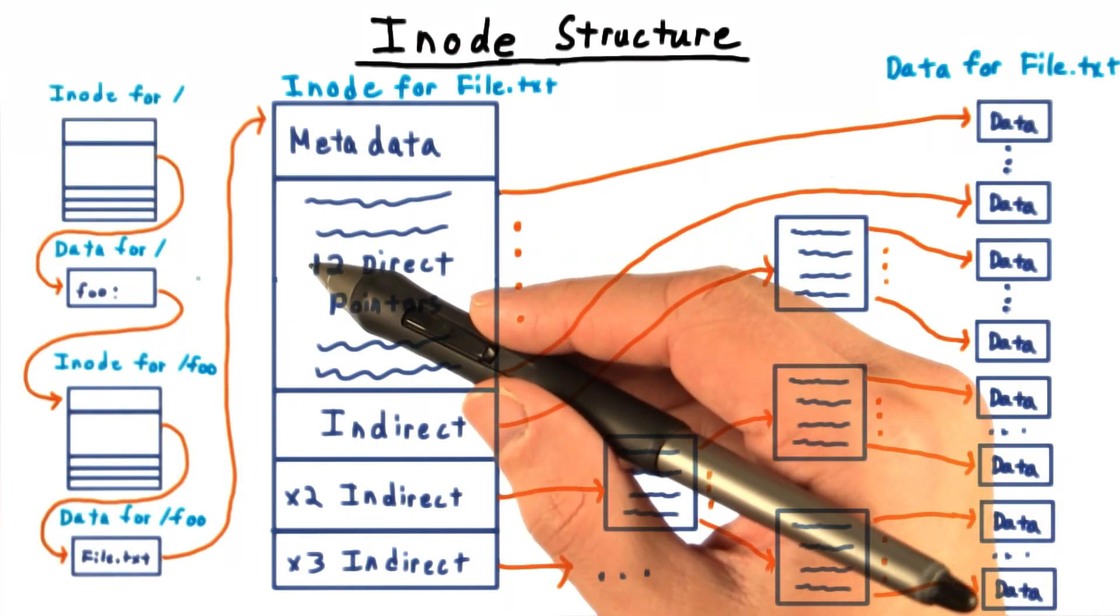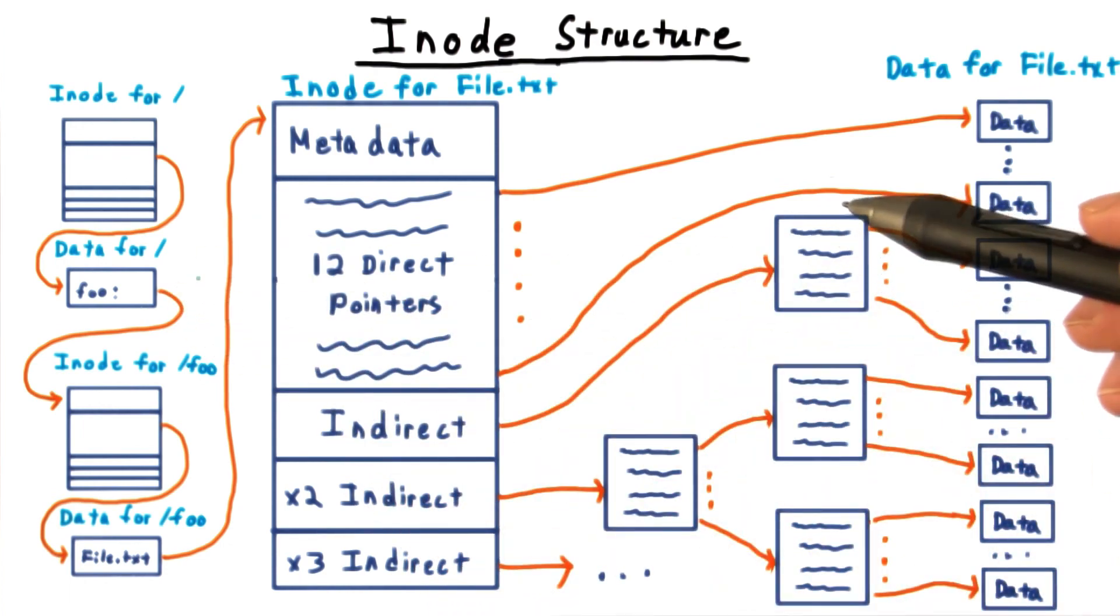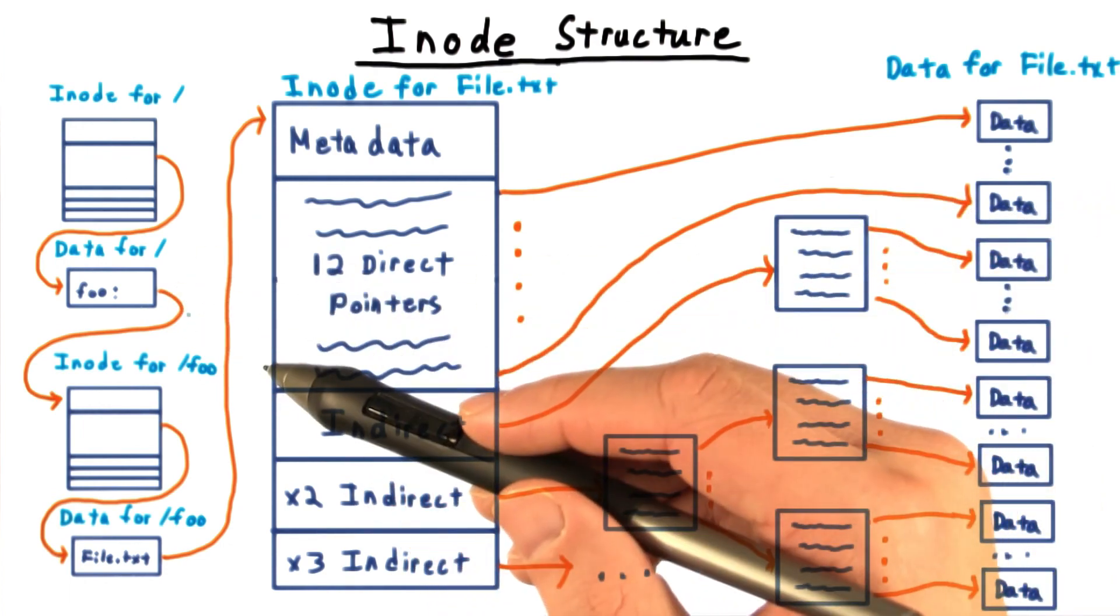Just like in FAT, directories are treated as files. Only instead of mapping a file name to the first file block, they map a file name to its inode.